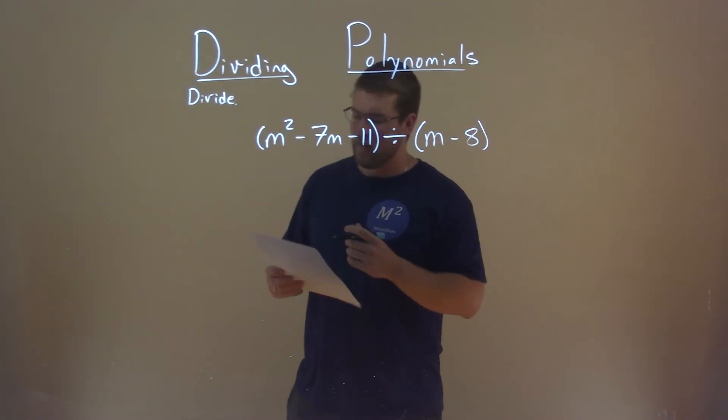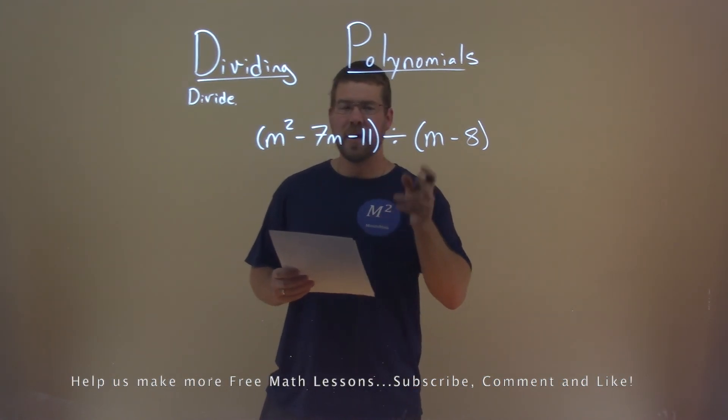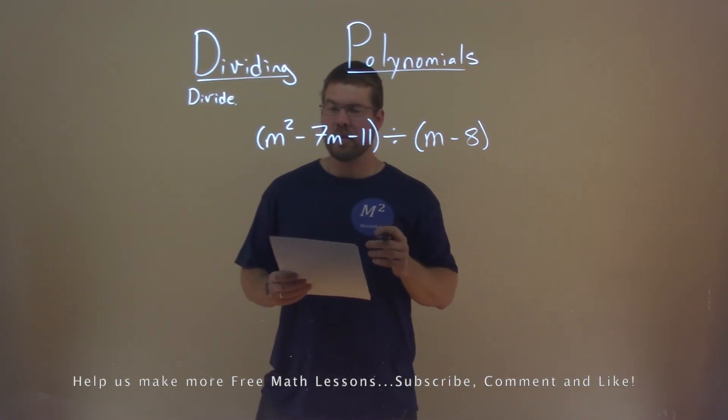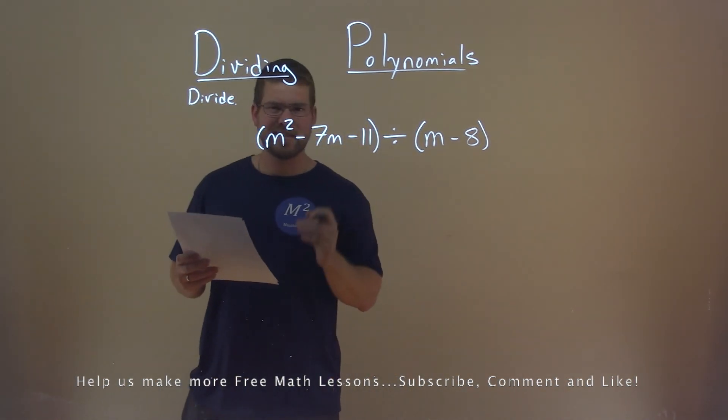We're given this problem right here: m squared minus 7m minus 11 divided by m minus 8, and we need to divide this. Well, let's do some synthetic division.